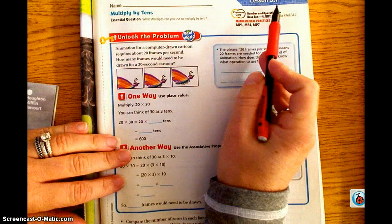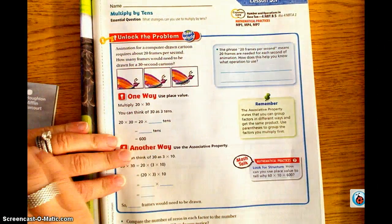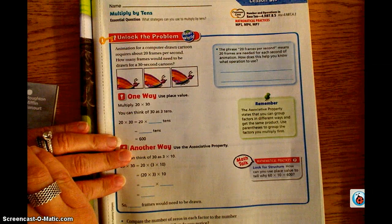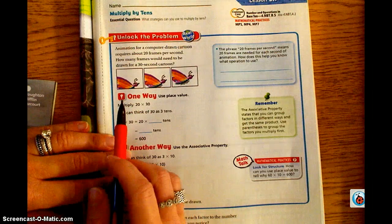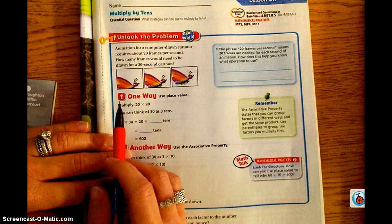Welcome to your lesson 3.1 screencast. You need to have your math book open to page 145. This is your first flipped lesson for chapter 3.